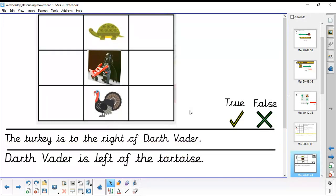So this question here is asking which statement is true or false. It says the turkey is to the right of Darth Vader. Okay, well, if the turkey is to the right of Darth Vader, that means that Darth Vader would turn to the right and he would see a turkey, but he isn't. He's now looking at the tortoise. So this one is false.